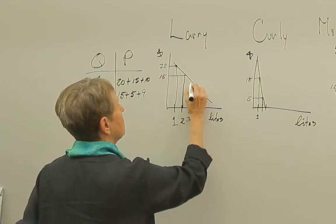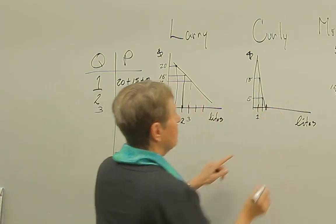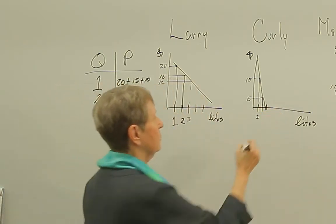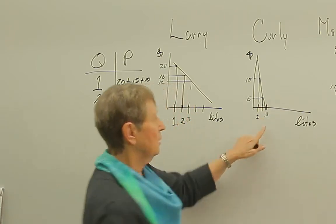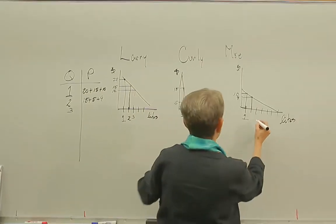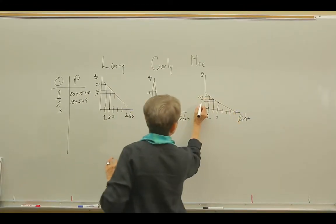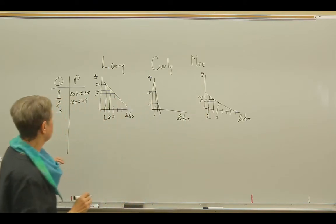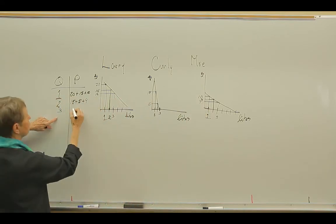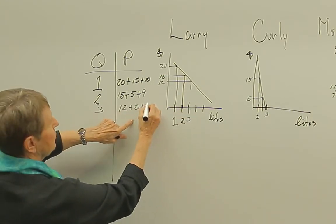Street light number three is worth $12. Street light number three to Curly, there's nothing. He doesn't want it. It's too much light, he can't sleep at night with that many street lights. Street light number three is worth $7. So street light number three is worth $12 plus $0 for Curly plus $7.